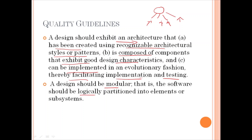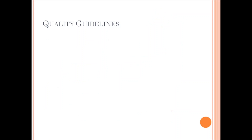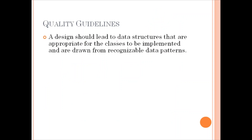The software should be logically partitioned into elements or subsystems. A design should contain distinct representations of data, architecture, interfaces and components. It should lead to data structures that are appropriate for the classes to be implemented and are drawn from recognizable data patterns. One important aspect is what kind of data structures we are going to use for a particular software implementation.